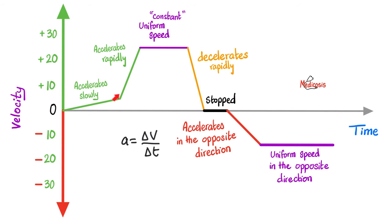My velocity was going up in both sections. However, in this part, my velocity was increasing at a higher rate than during this part. And then I decided to keep a constant speed — you can call it constant velocity, uniform velocity, or steady velocity. And then look at this: my velocity is decreasing, let's say from 20 meters per second to 10 meters per second, and then 5 meters per second. I am decelerating. And because this line is very steep, it is a rapid deceleration. Then my velocity reached zero, which means that I stopped moving.